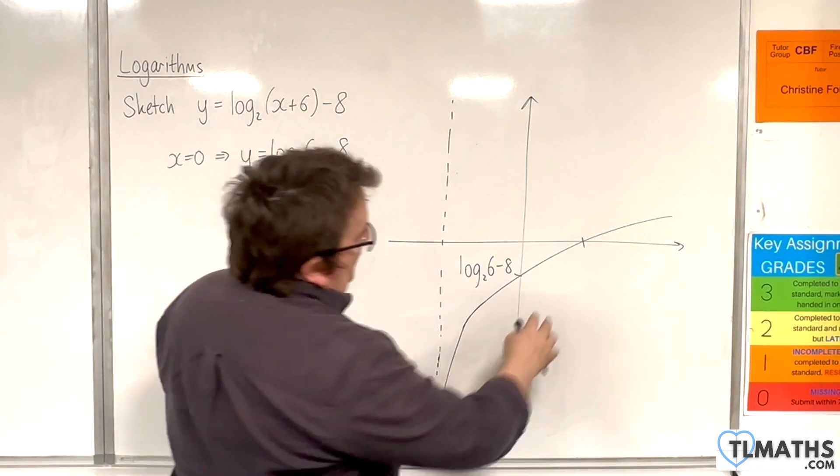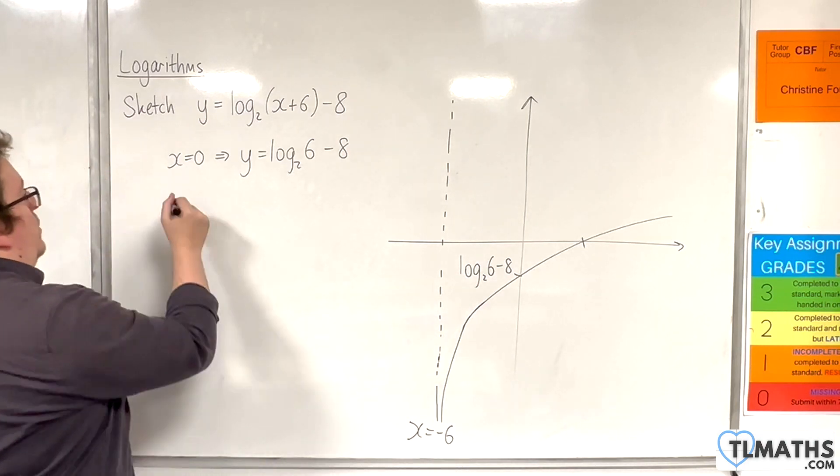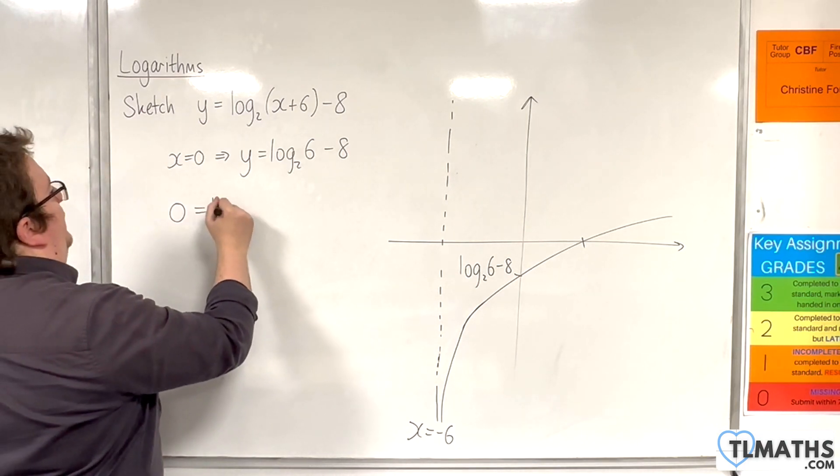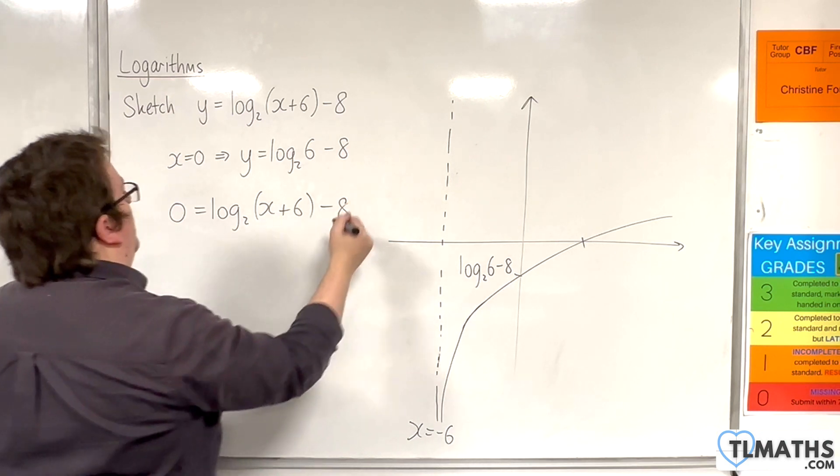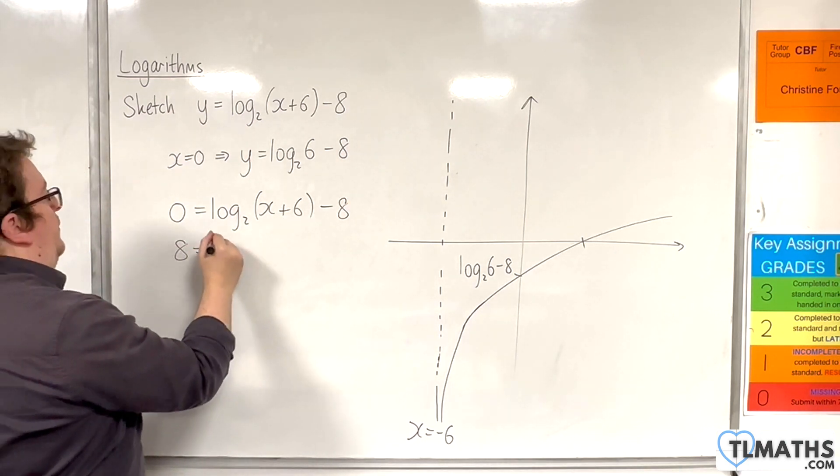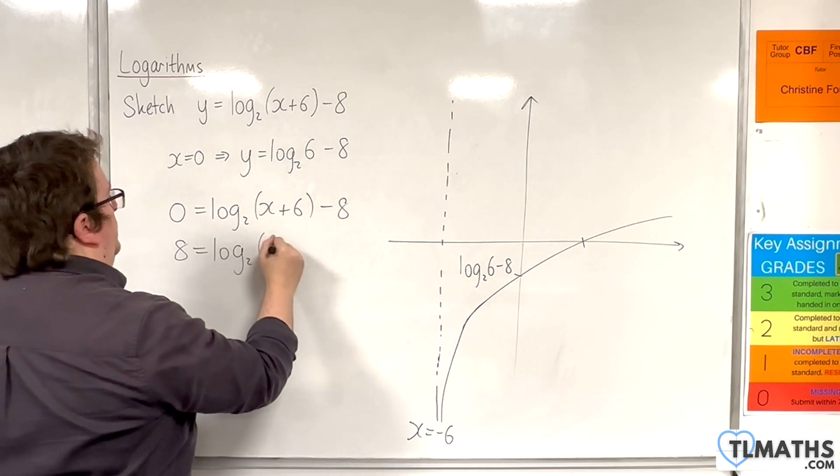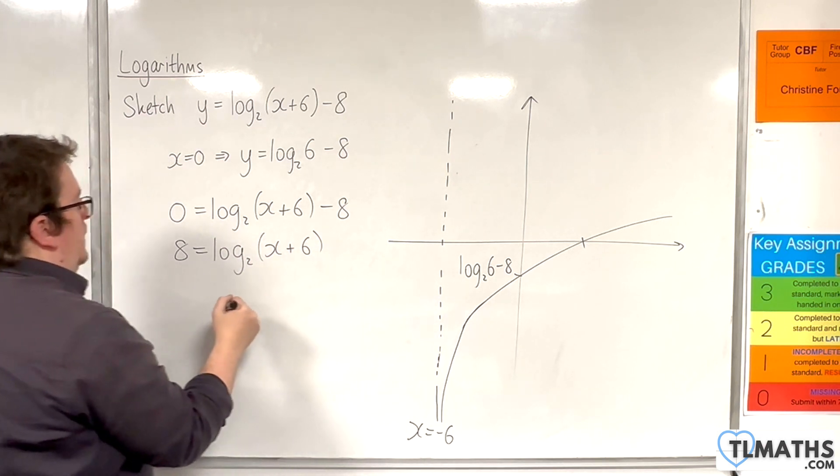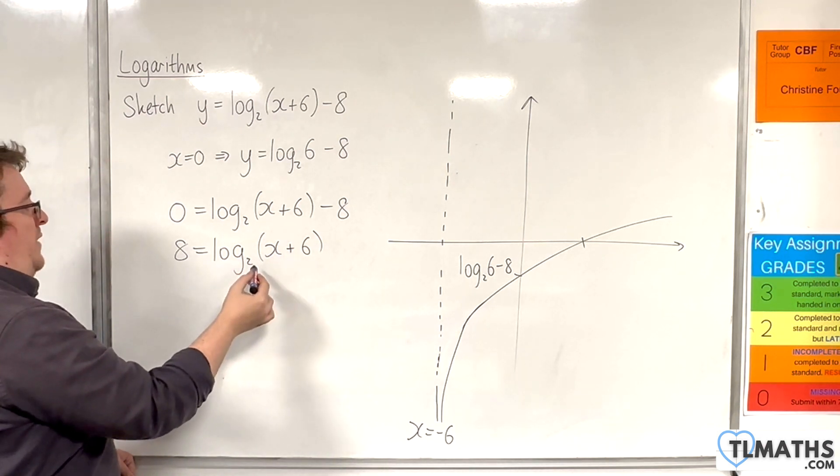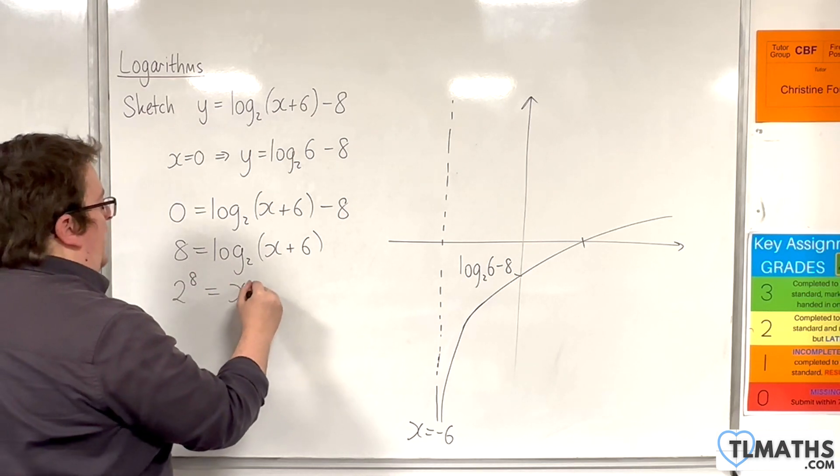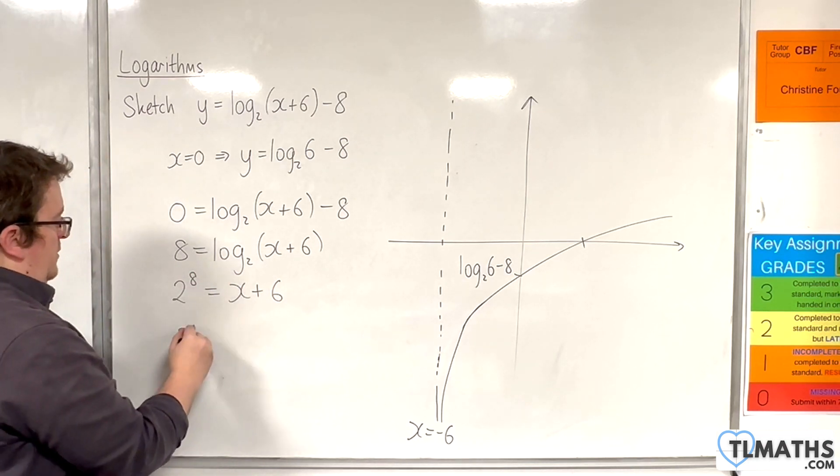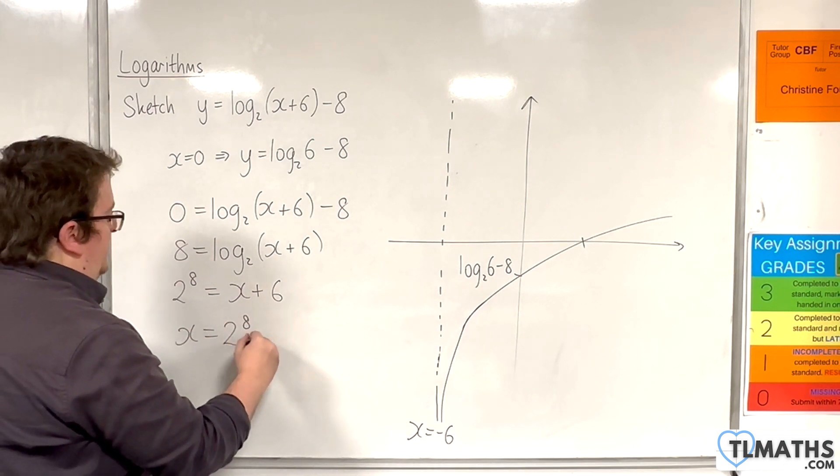And it crosses the x-axis when y is 0. So 0 equals log base 2 of x plus 6, take away 8. Add the 8 to both sides. Then going from logarithmic form to exponential form, 2 to the power of 8 is going to be equal to the x plus 6. So x is 2 to the 8, take away 6.